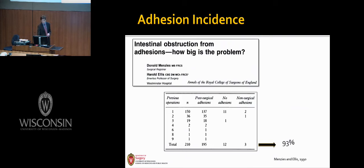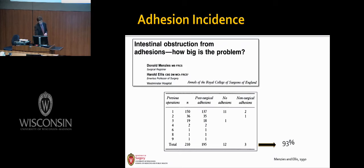In a prospective living series, Menzies and Ellis evaluated adhesions present at the time of laparotomy. They noted that at first-time laparotomy, nearly 10% of patients had adhesions, and in those with prior operations, 93% had adhesions — most frequently encountered with re-operations. In the same study, they monitored follow-up on adhesions, finding that adhesive obstruction was most commonly seen in the early post-operative period: nearly 40% of adhesive obstructions occur within the first year and 20% within the first month.